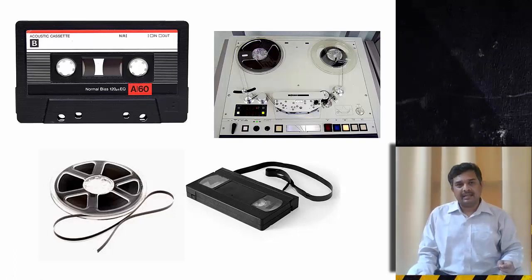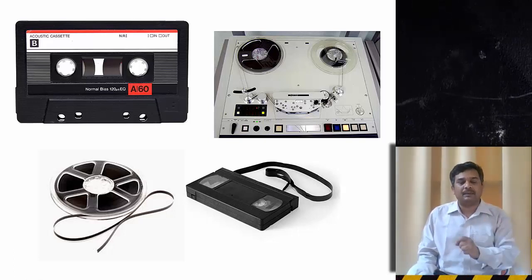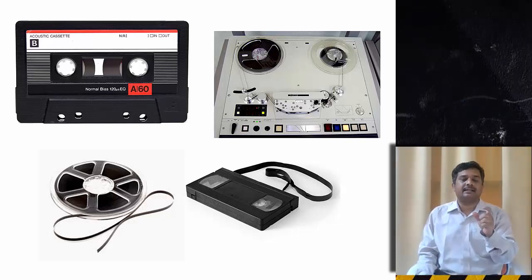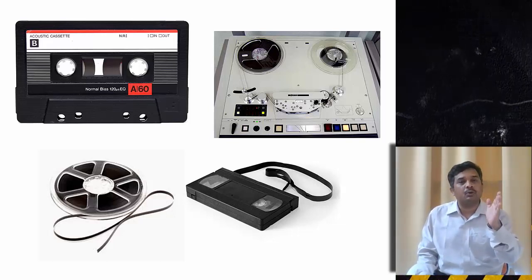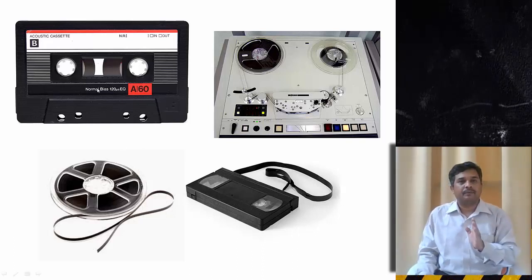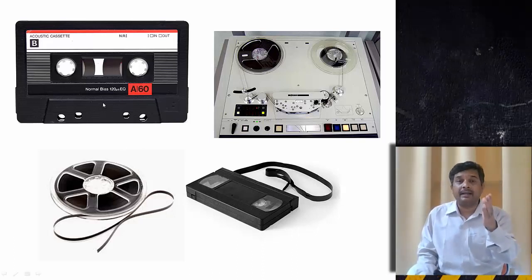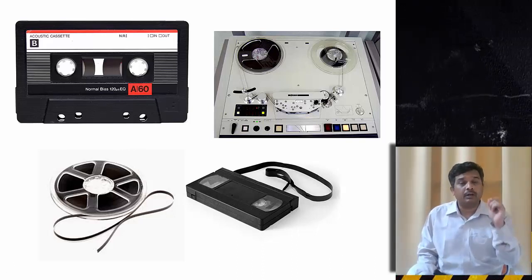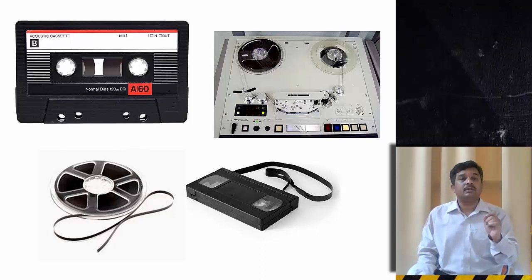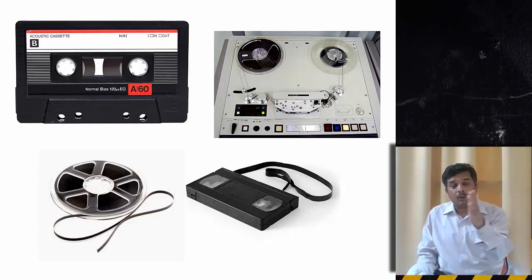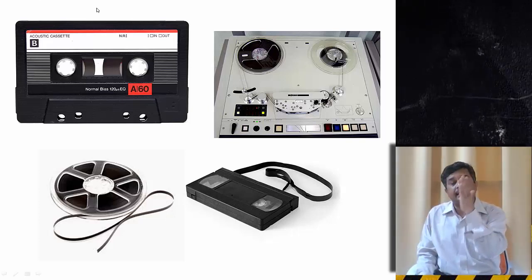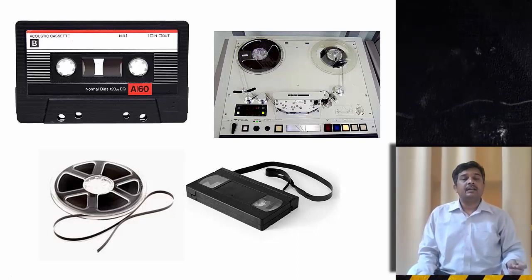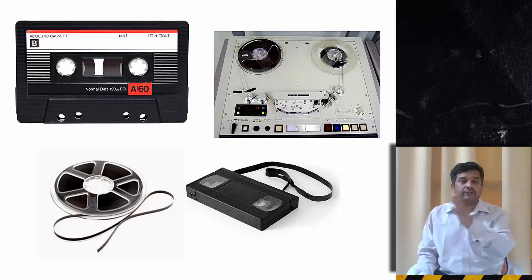As you can see, these tapes are sequential by nature. If you are storing some files or songs in these cassettes, then after first song only you can go to the second song. Like a CD, you cannot play directly the second song or the fifth song or tenth song. If you want to go to the tenth song using a tape, you have to skip all the nine songs and then you can reach the tenth song and play. So this is a sequentially arranged file.